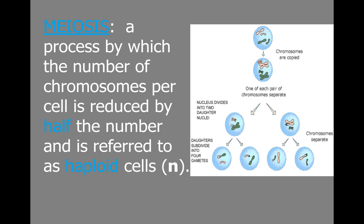So meiosis — what does this mean? We have previously talked about mitosis, which is how the body makes more cells to grow and to repair itself. Meiosis is a different process. This is a process by which the number of chromosomes in the cell are going to be reduced by half. This results in haploid cells, and I like to remember haploid sounds like half. So if we're reducing the chromosome number by half, that means in human beings we're going to take those 46 chromosomes and reduce that to 23 chromosomes in all of the cells made in this process.